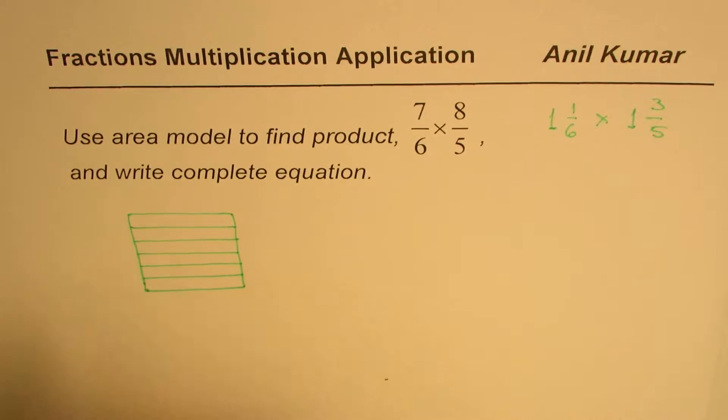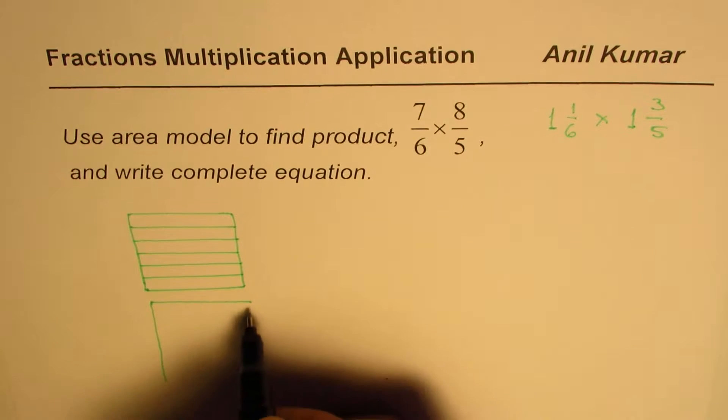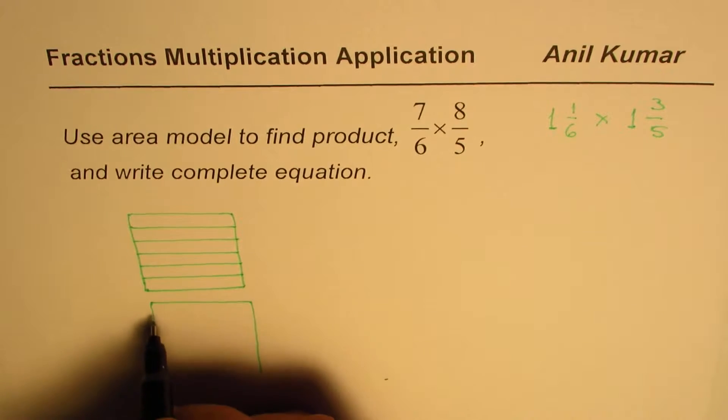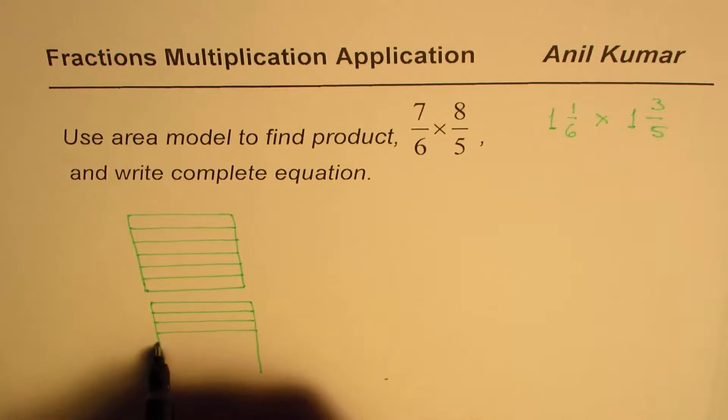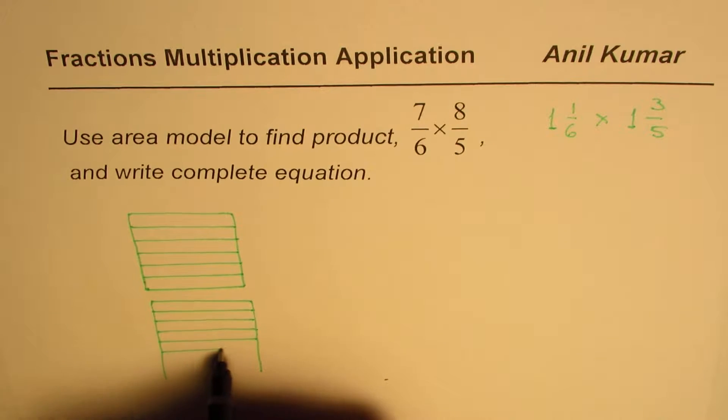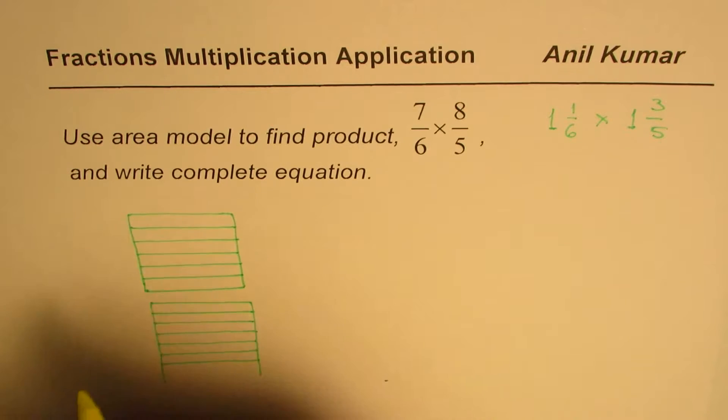So 1 whole and 1 more. So another one similar kind. So the idea is just keep it open and try to make equal rows. 1, 2, 3, 4, 5, and 6. That is what it is. And let us select 7 out of 6, right?